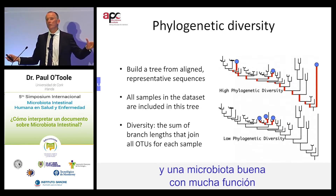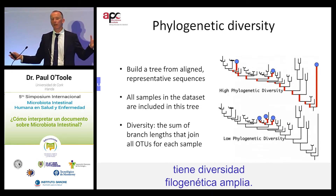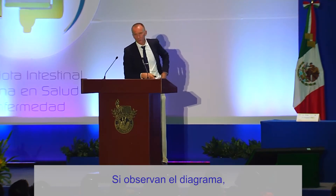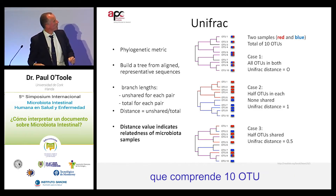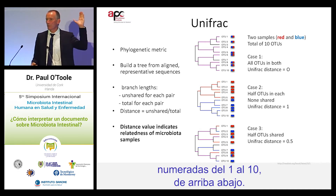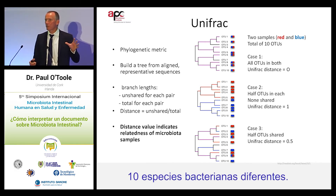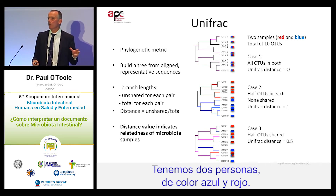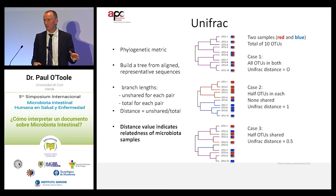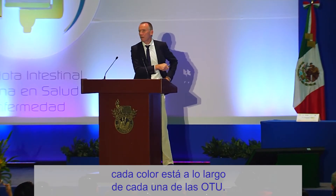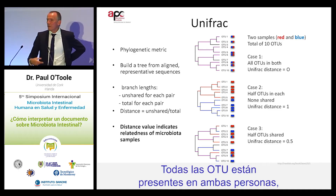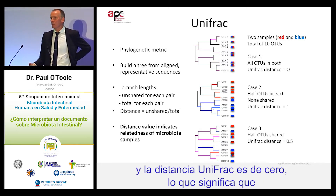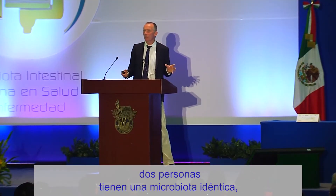Typically a good microbiota with lots of function has a wide phylogenetic diversity. On the top right we have a simplified theoretical microbiota comprising 10 OTUs, numbered 1 to 10 from top to bottom — 10 different bacterial species. We've got two people colored in blue and red, where each color sits alongside each of the OTUs. So all of the OTUs are present in both subjects, and the UniFrac distance is zero, meaning that two people have an identical microbiota, which is highly unlikely.